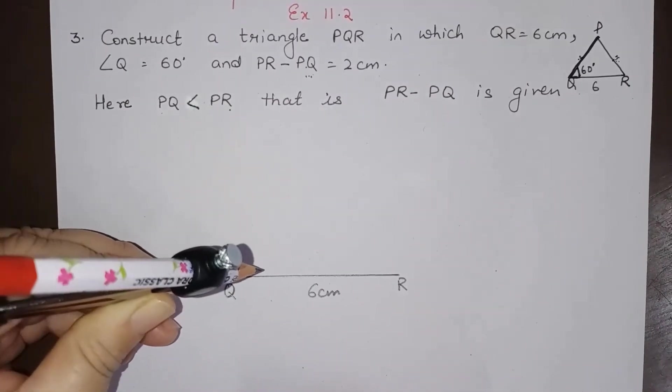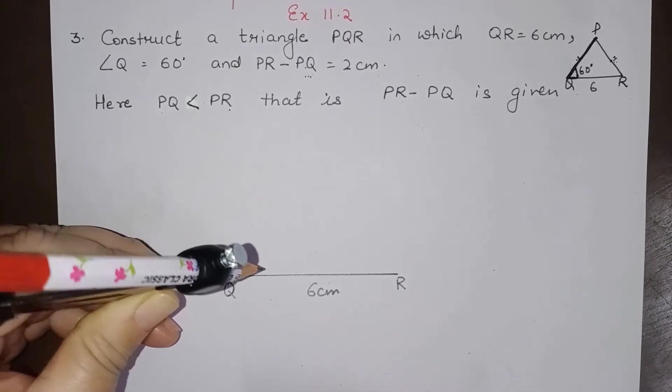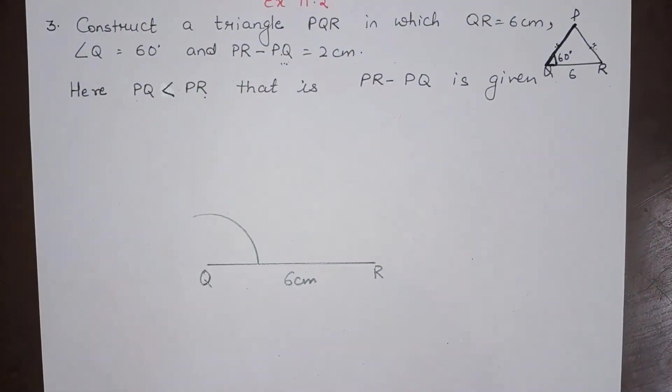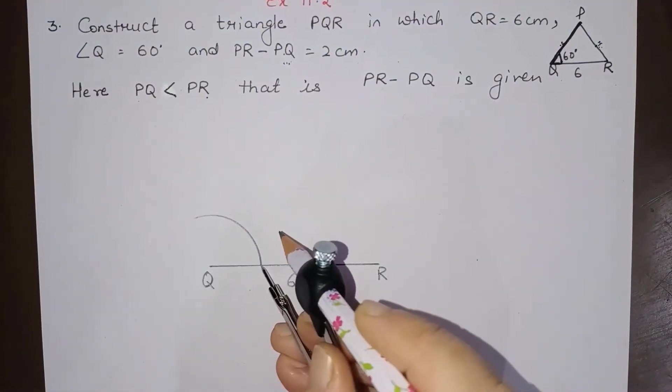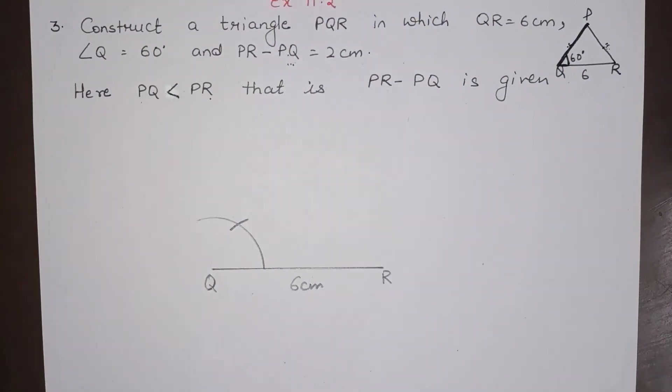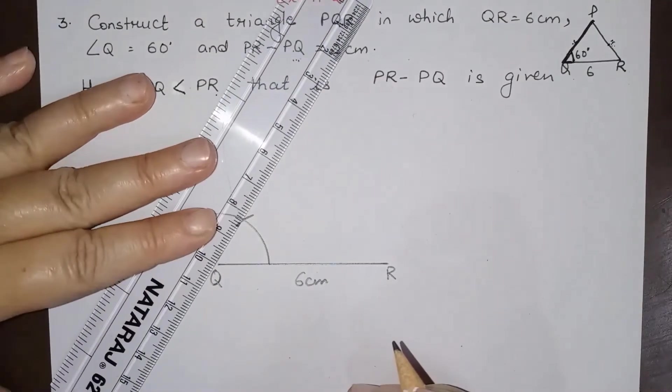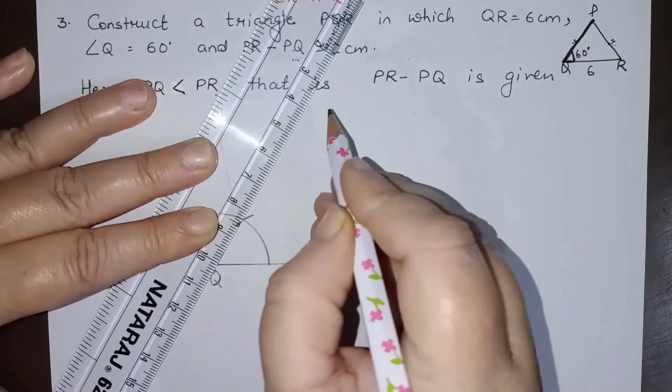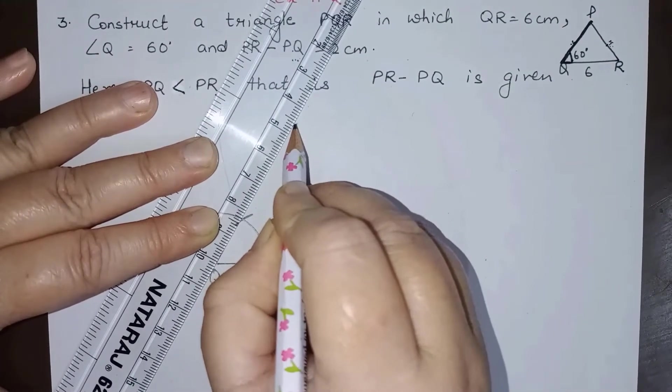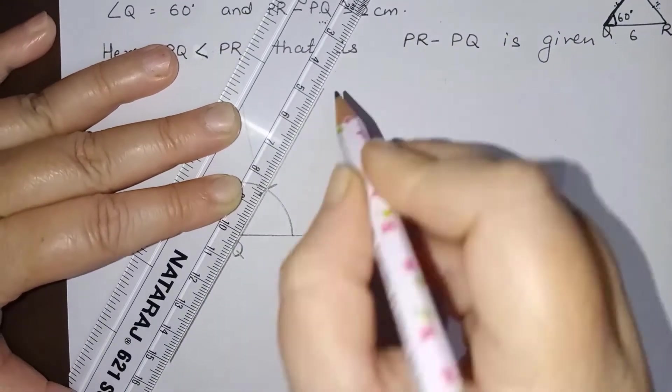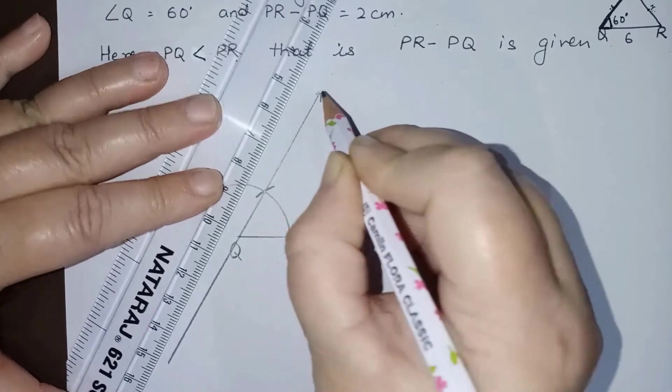Now at Q we will draw angle of 60 degree. So from this point Q, this is an angle of 60 degree. Now remember one thing here, what we have to do is we have to extend this line to the other direction also.